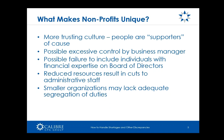Another factor is failure to include individuals with financial expertise on the board. Often the board of directors at a nonprofit is comprised of large donors or people passionate about the cause. Reduced resources resulting in cuts to administrative staff is also common — when a nonprofit has tough times, the first cuts always go to administrative staff, not program staff. When you cut administrative staff, people have more responsibilities, you lose segregation of duties and review time. Small organizations may simply not have the resources for appropriate segregation of duties — you may only have one person handling all accounting functions. So how do you address that and mitigate those risks?